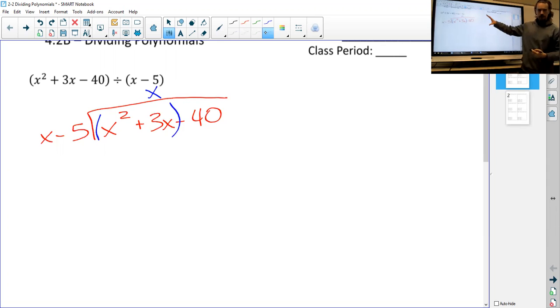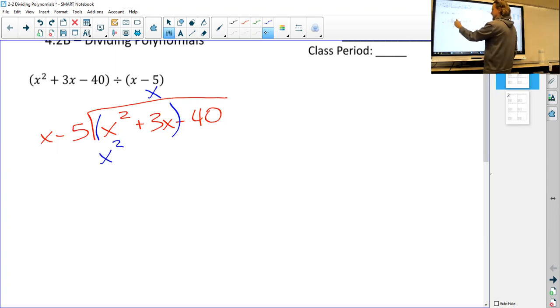We do division like you would with regular old numbers, so I'm going to multiply whatever's up here by everything on the outside. X times x is x squared, x times negative 5 is negative 5x, and then you subtract.